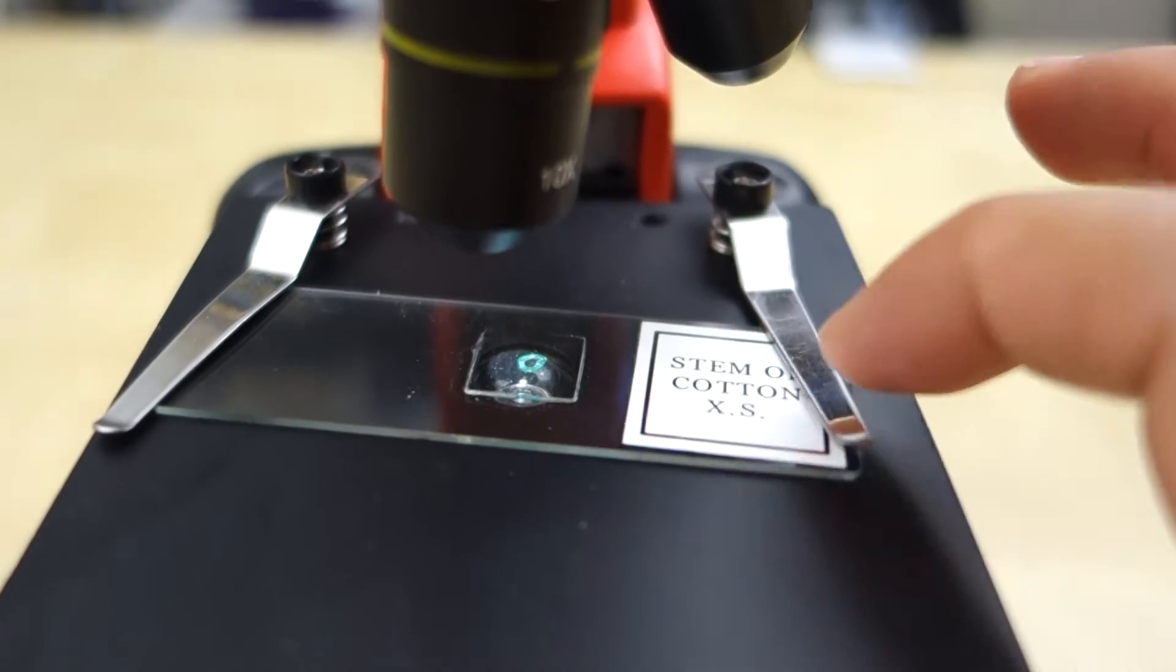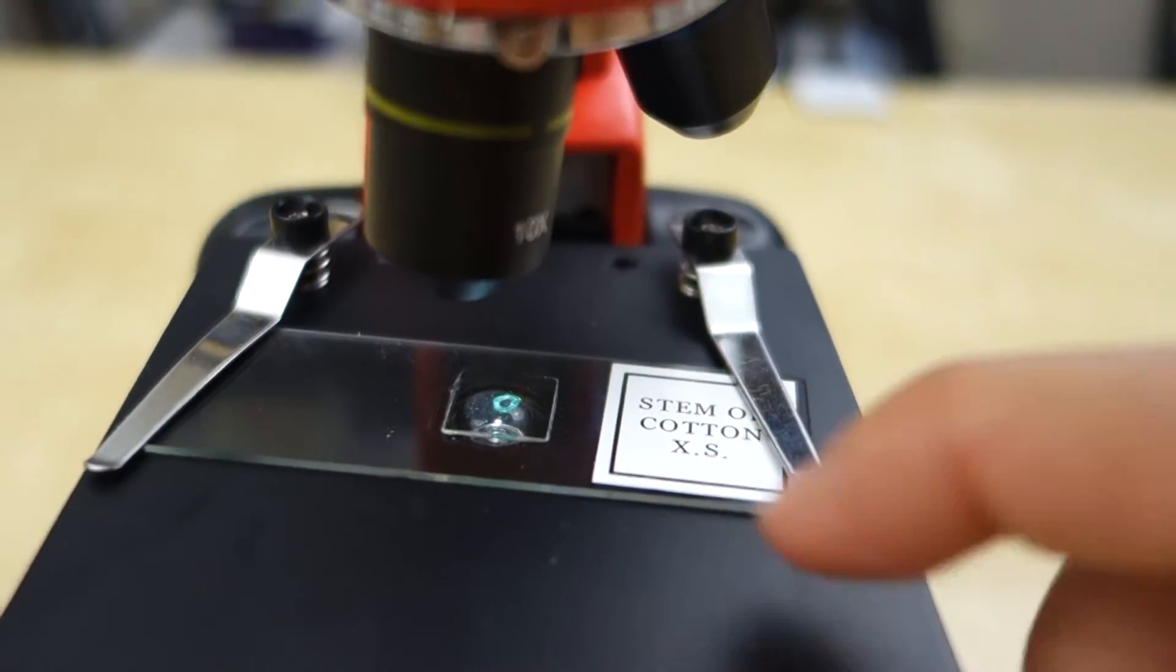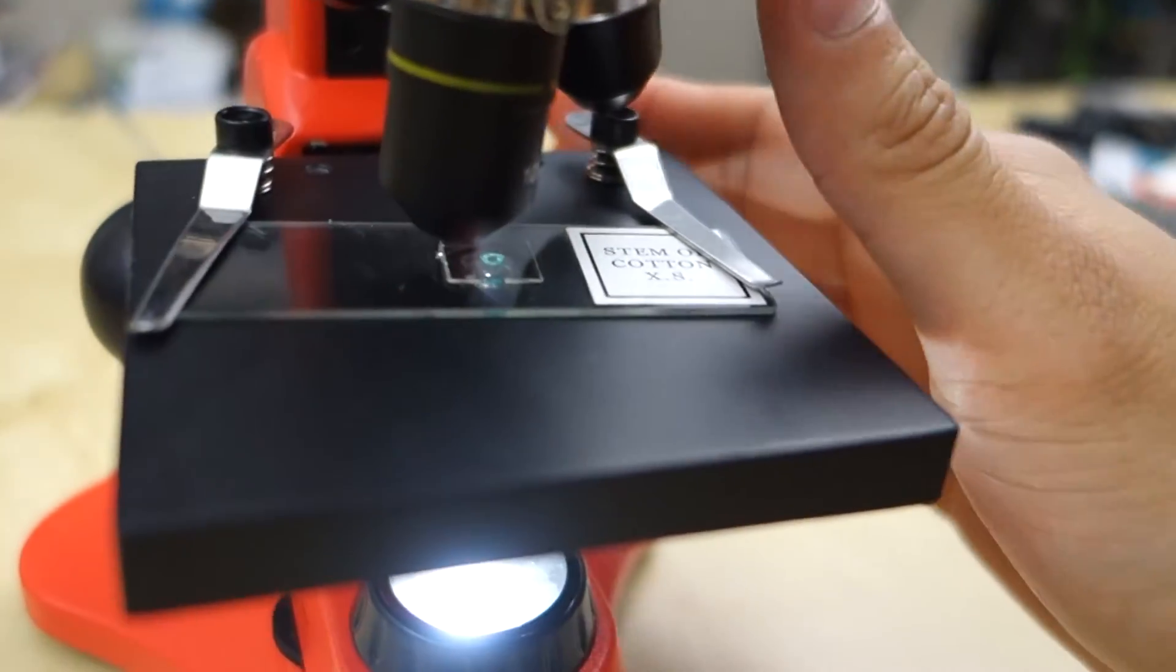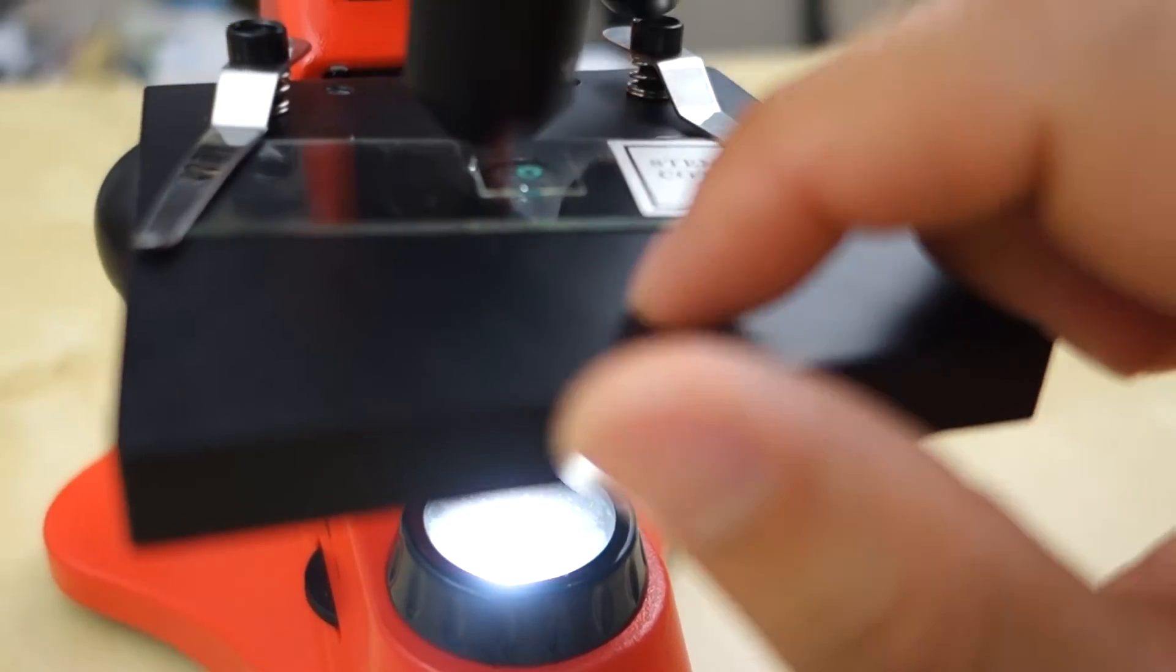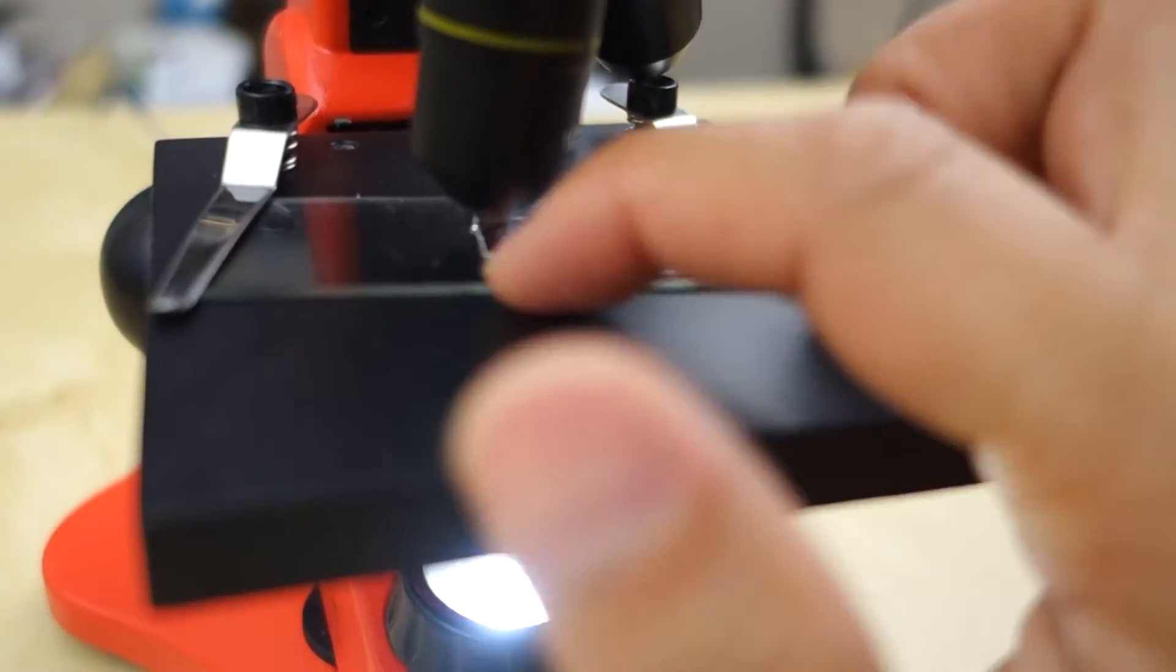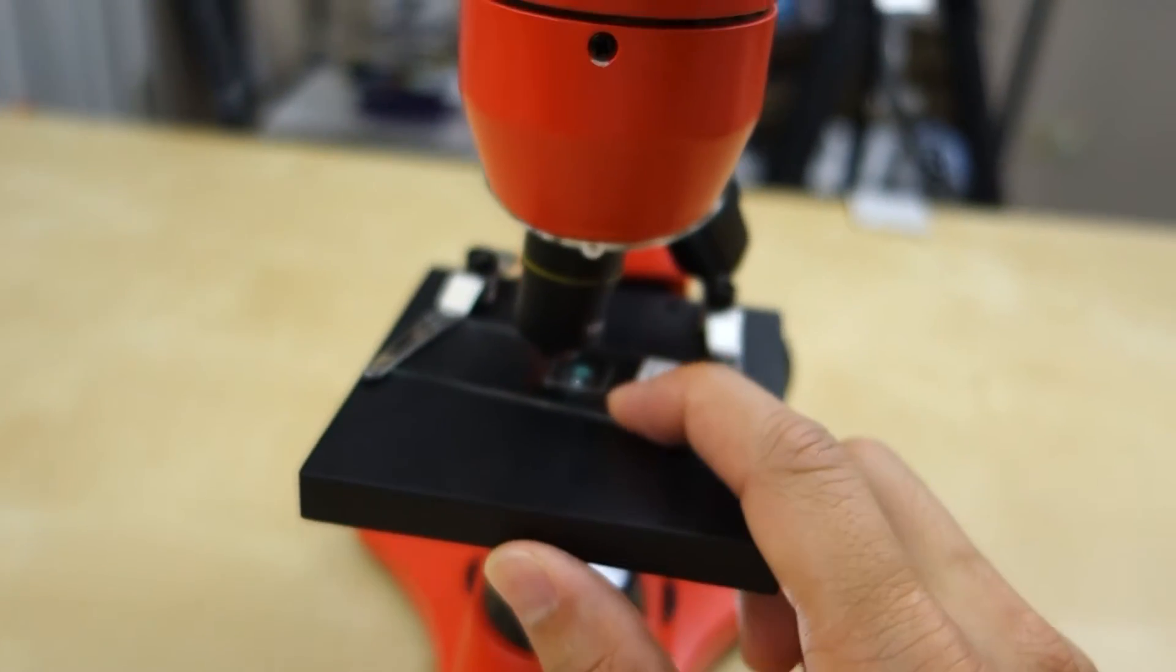So they give you a few of these slides that have stuff already put on it. And you can also add some more because they give you more slides. And then over here you have the knob that adjusts the focus. So when you are using a 40x, I found that in order to get focus, you pretty much have to have the lens here touching the glass pretty much. So definitely you want something on a very flat surface.